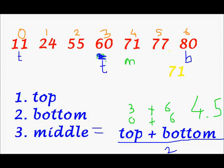Let me take another number. Let's say we want to find 21. Top will be the first position of the array, bottom will be the last position. Middle = (0 + 6) / 2 = 3. So this is our middle element.